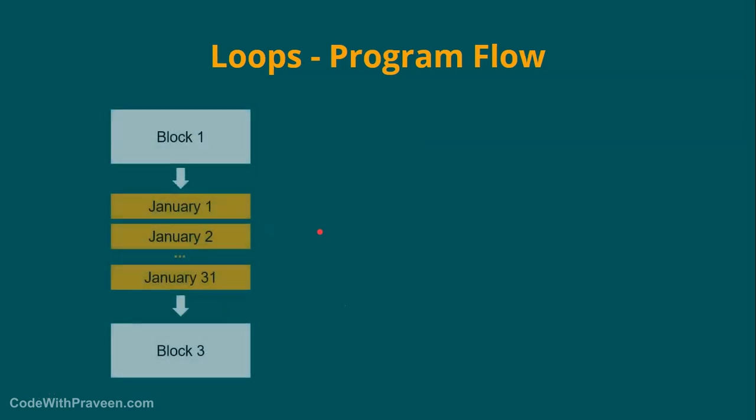Just see this example. Suppose you have block 1 and block 3, and you want to print January followed by the date. Now you want to print this for the entire month of January. A simple way to do is you repeat that block multiple times like January 1, then you print January 2, then you keep repeating until January 31. This obviously does the job, but as you can see it is not productive and it's prone for errors and it has various other limitations.